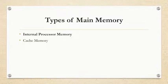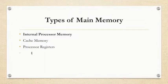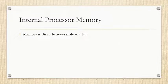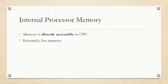Internal processor memory is further classified into cache memory and processor registers. IPM is directly accessible to the CPU, meaning the CPU has direct access to internal processor memory — also called cache memory or processor registers. Cache memory is the fastest memory, as you may have read in class nine MCQs.